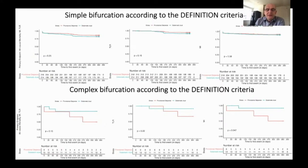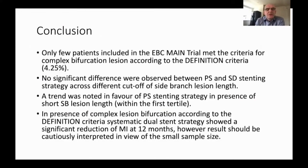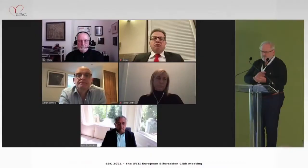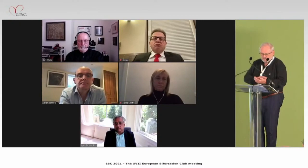In conclusion: only a few ABC Main patients — 4.25% — meet the DEFINITION criteria for a complex bifurcation lesion. No significant differences were observed between provisional and systematic dual stenting across different side branch lesion length cutoffs. A trend favored provisional stenting with discrete short side branch lesions (first tertile). Provocatively, in patients meeting DEFINITION criteria for complexity, systematic dual stenting showed a significant reduction in MI at 12 months — though this must be interpreted cautiously given the very small sample size.